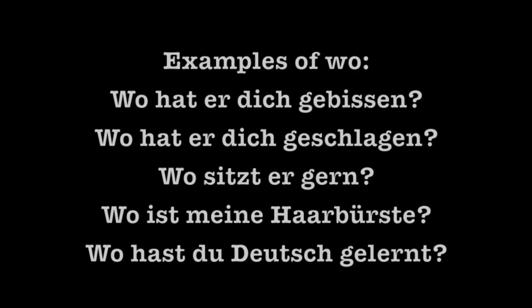The next one is Wo, which means 'where'. It's used to inquire about the location of someone or something. Examples: Wo hat er dich gebissen (where did he bite you?), Wo hat er dich geschlagen (where did he hit you?), Wo sitzt er gern (where does he like to sit?), Wo ist meine Haarbürste (where is my hairbrush?), Wo hast du Deutsch gelernt (where did you learn German?).